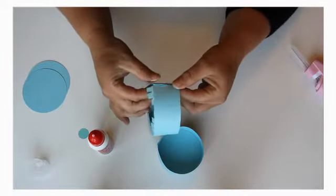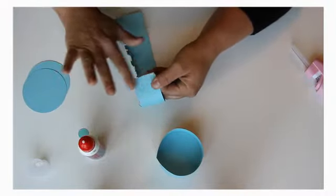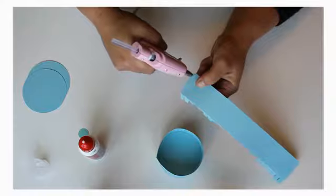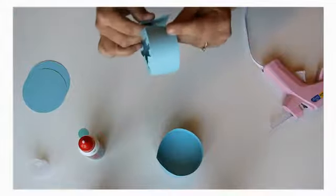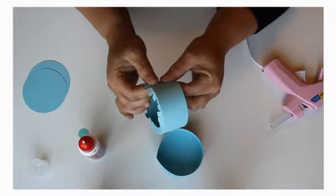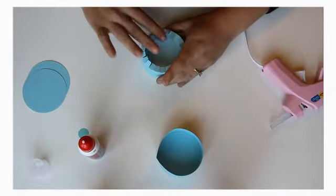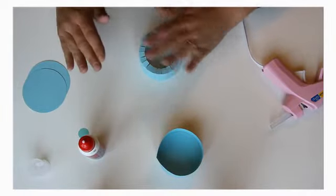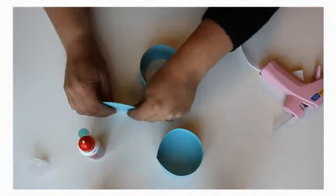Mine is not. I use the coordinations cardstock and whenever I do anything circular it does not want to work. Maybe I will use the hot glue to make it go faster. Put the glue there and put it together just like that. Okay, that seemed to work a lot better.